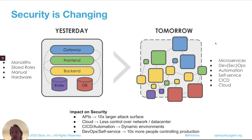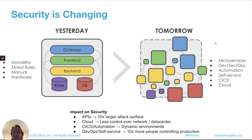Those APIs are now not only publicly available, but also available privately within your microservice architectures. We're running all kinds of workloads on hardware and networks that we have no physical control of, so there's just less overall control over the networks and data centers that we're using. With CICD and automation, people are deploying applications to all kinds of data centers all over the planet. The environment in which we're deploying software is simply far more dynamic than it used to be.